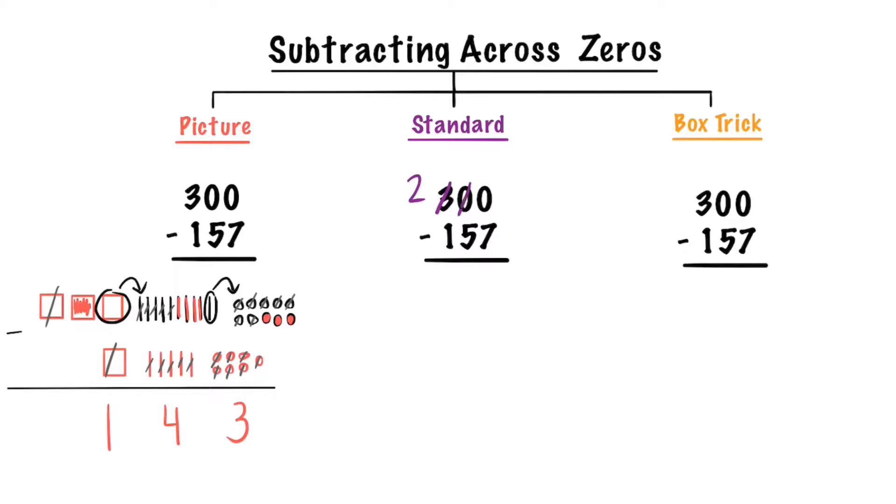We can give those hundreds that we borrowed over to the tens place which would make 10 tens. But we still don't have ones. Now we can borrow from the tens.